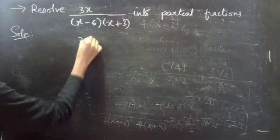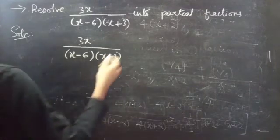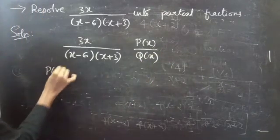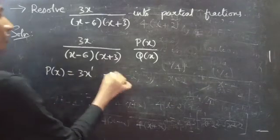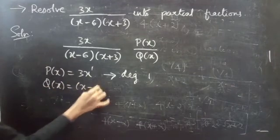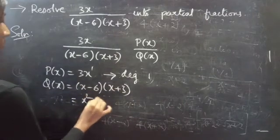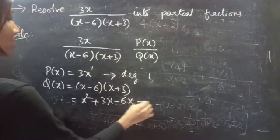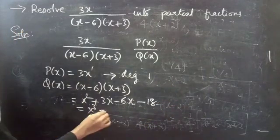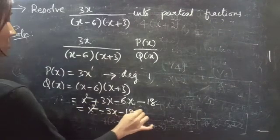We are given a fraction 3x by (x minus 6)(x plus 3). Let us consider it as P(x) by Q(x). We have P(x) equals 3x to the power 1, so the degree of P(x) is 1. Now consider Q(x): Q(x) equals (x minus 6)(x plus 3). Multiplying it out gives x squared plus 3x minus 6x minus 18, which equals x squared minus 3x minus 18.